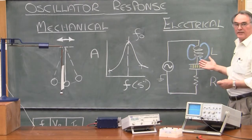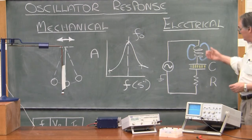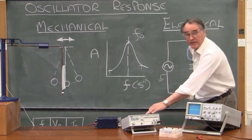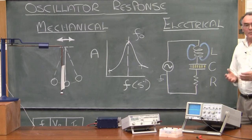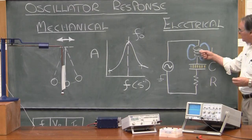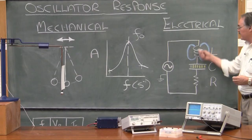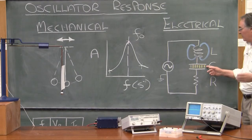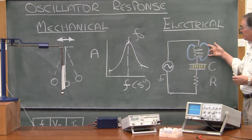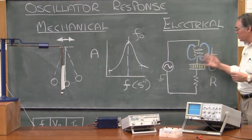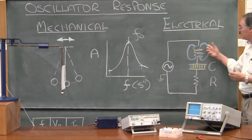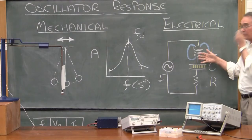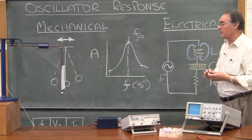Now let's have a look at the electrical oscillator we're going to be doing today. There's an inductance, a capacitor, and a resistance in the circuit, and we're going to be driving it by means of this function generator. An important property of inductance and capacitance is this: the inductance builds up a magnetic field when there's a current through it, and the capacitor builds up an electric field when there's a voltage across it. So what is happening in this oscillator is that energy is being transferred backwards and forwards from the magnetic field into the electric field — exactly the same way as in the mechanical oscillator.